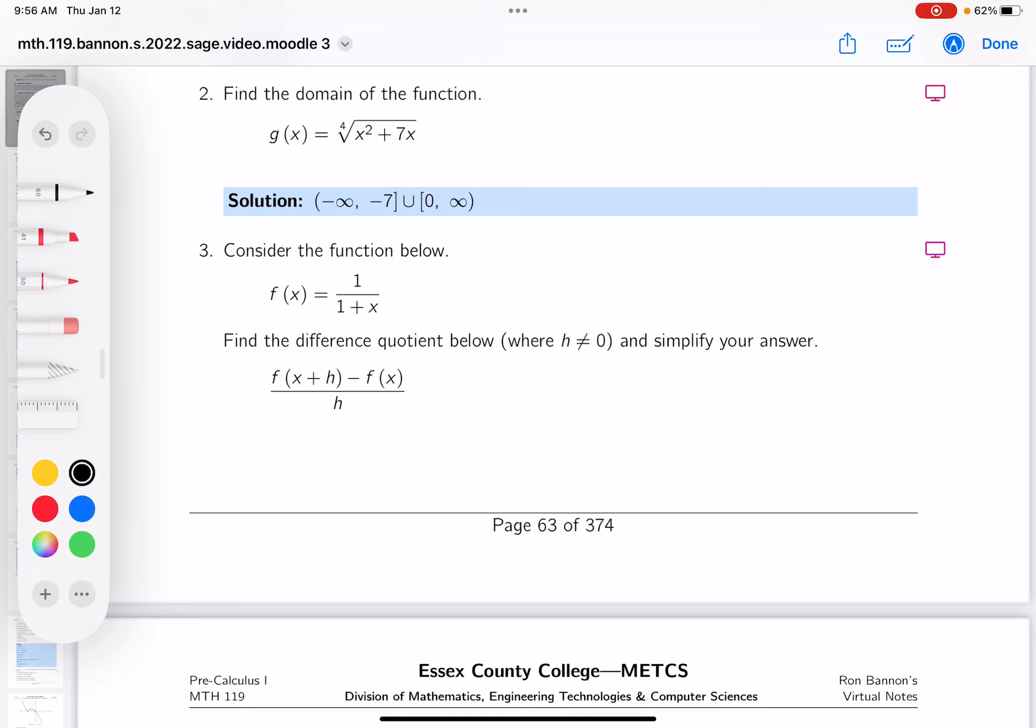Okay, this is problem number two, and they're asking what the domain of this problem is. It's an even root, so the radicand, x squared plus 7x, must be greater than or equal to zero.